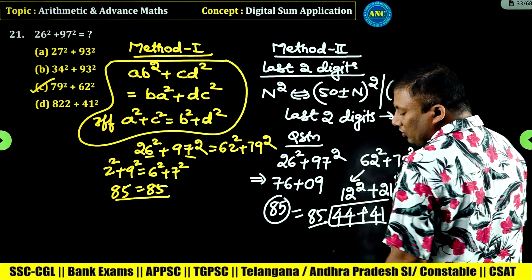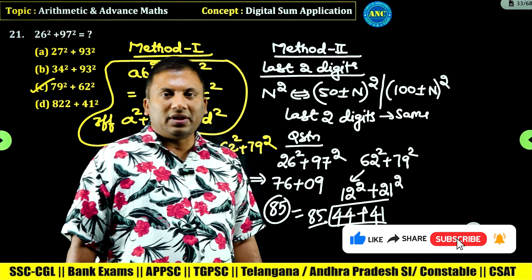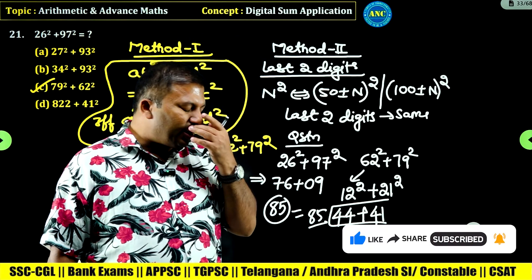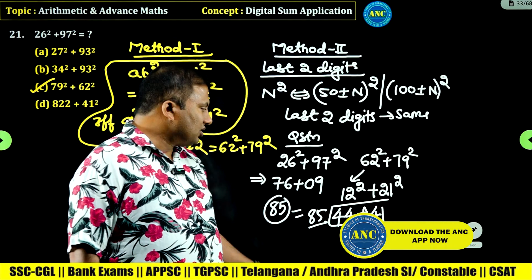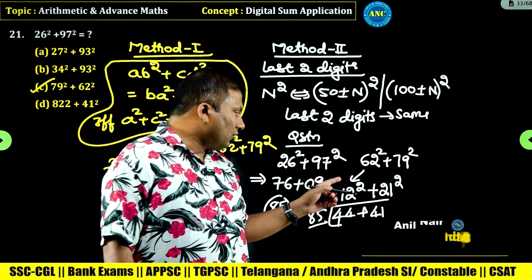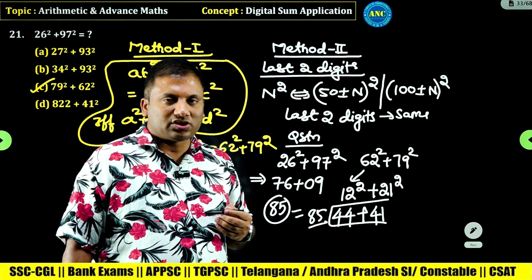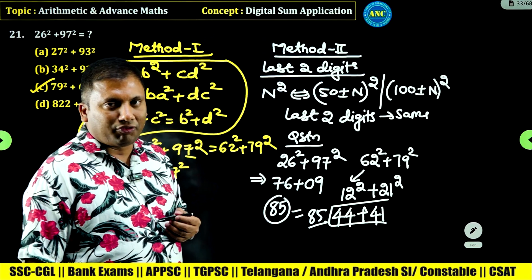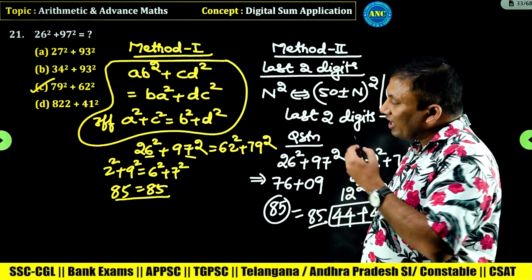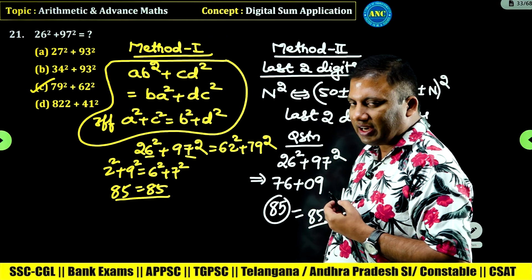Are you all with me? You can check using the last two digits. 26 square plus 97 square: 97 is 3 less than 100, so last two digits are 09. 62 is 12 more than 50, so 12 square is 144. 79 is 100 minus 21, so 21 square is 441. Check the last two digits for the question and last two digits for the answer — they match.